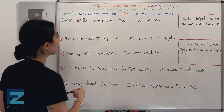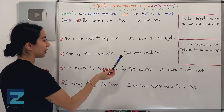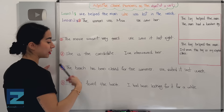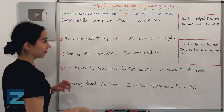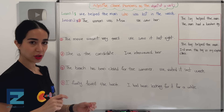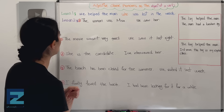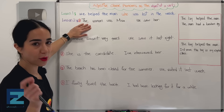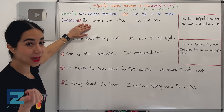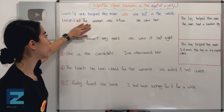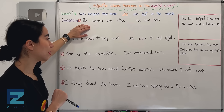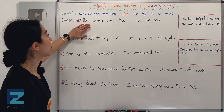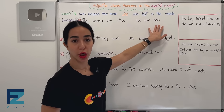We helped the man who was lost in the woods — that's a dependent clause and an independent clause together, which we covered in the previous lesson. Now let's move to lesson two, where we want to use relative pronouns as the object of the verb. The woman was Misa — we saw her.